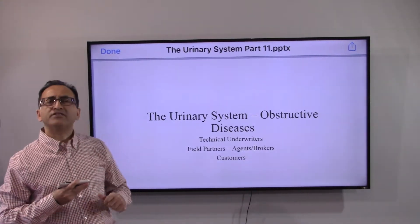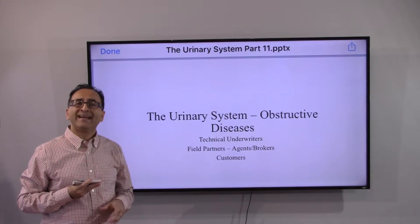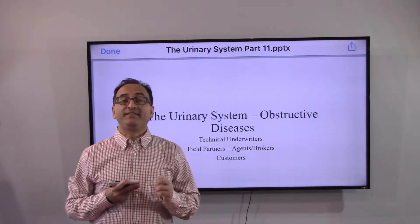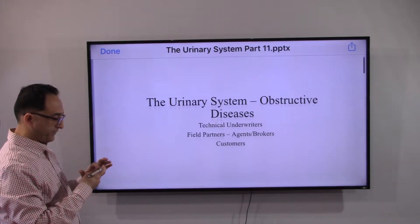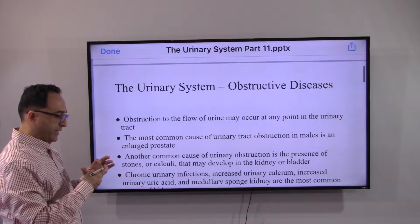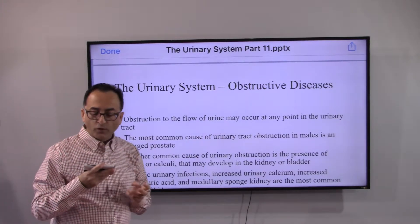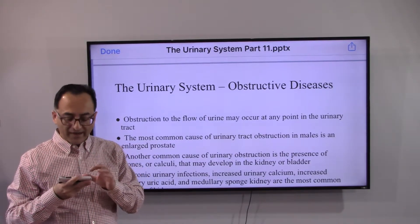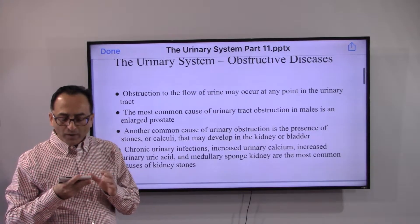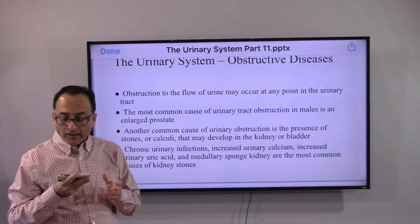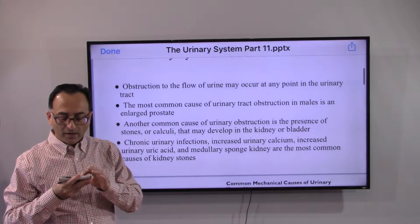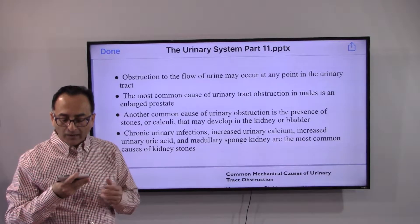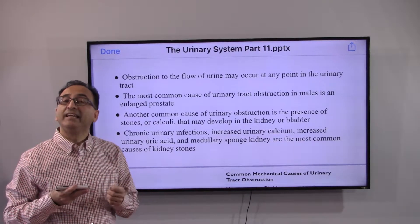Welcome back. Let's continue with the urinary system. In this video we will be looking at the variety of obstructive diseases. The obstruction to the flow of urine may occur at any point in the urinary tract. The most common cause of urinary tract obstruction in males is an enlarged prostate. Another common cause is the presence of stones or calculi that may develop in the kidney.